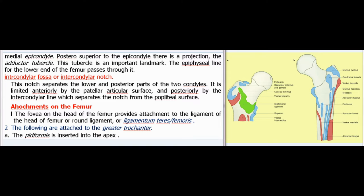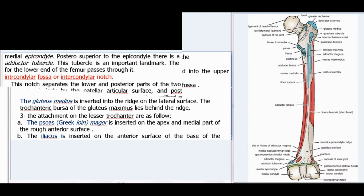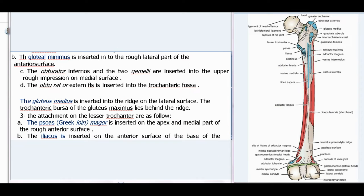The intercondylar fossa or intercondylar notch separates the lower and posterior parts of the two condyles. It is limited anteriorly by the patellar articular surface and posteriorly by the intercondylar line. Attachments on the femur: The fovea on the head provides attachment to the ligament of the head of femur (round ligament or ligamentum teres femoris). Attachments to the greater trochanter: the piriformis is inserted into the apex; the gluteus minimus is inserted into the rough lateral part of the anterior surface; the obturator internus and the two gemelli are inserted into the upper rough impression on the medial surface; the obturator externus is inserted into the trochanteric fossa; the gluteus medius is inserted into the ridge on the lateral surface. The trochanteric bursa of the gluteus maximus lies behind the ridge.